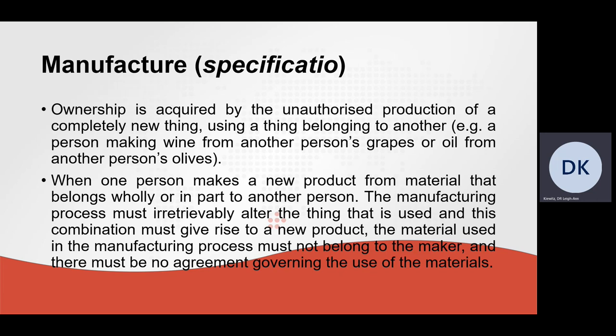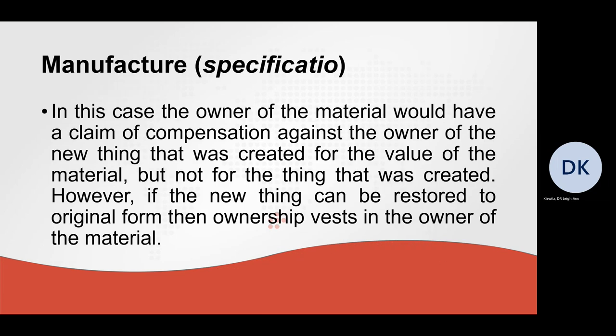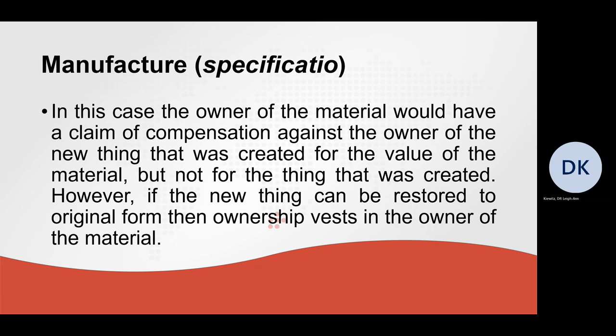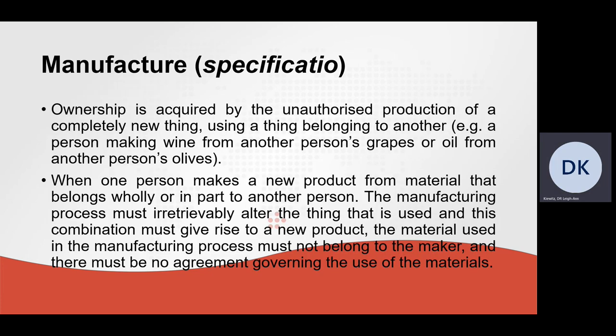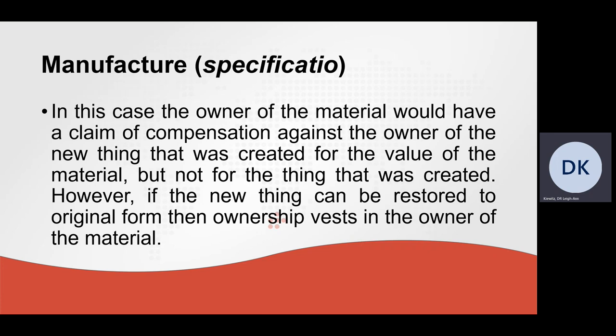There must be no agreement governing the use of the materials. The owner of the material would have a claim for compensation against the owner of the new thing for the value of the material, but not for the thing that was created. So in the case of an individual who made wine with someone else's grapes, the person whose grapes it is may institute a claim for compensation against the owner of the wine — that is, for the value of the grapes that were used, but not for the wine that was created.